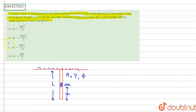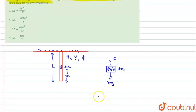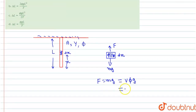If we draw the free-body diagram for this small element dx, we can see that the mg force acts in the downward direction and the restoring force acts in the upward direction. Here, mass m equals volume times density. So the force f equals mg, which equals volume times density phi times g. Volume equals area A times length, so the weight acting on the dx element is A times x times phi times g.